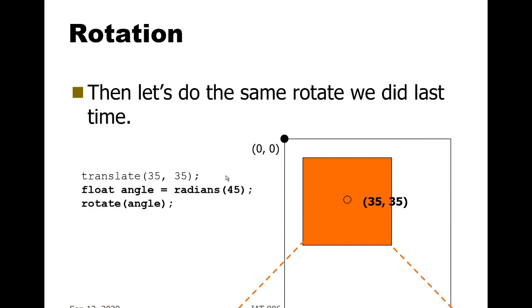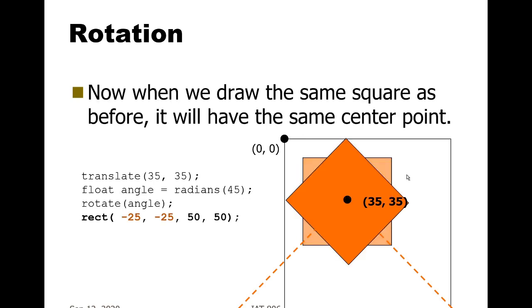Finally, we would compute the radian value of 45 degrees and rotate by that angle. That rotates the coordinate system as you see here. Then issue, once again, for the third time, the rect call, minus 25, minus 25, 50, 50. What that will end up doing is drawing the rectangle rotated by 45 degrees and rotated about its center.